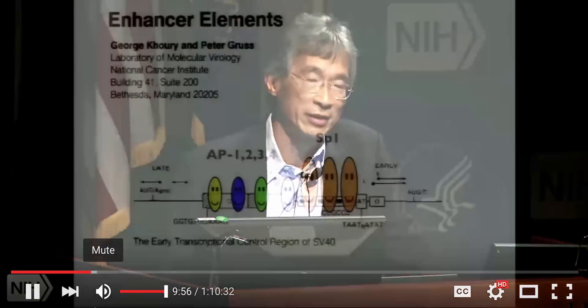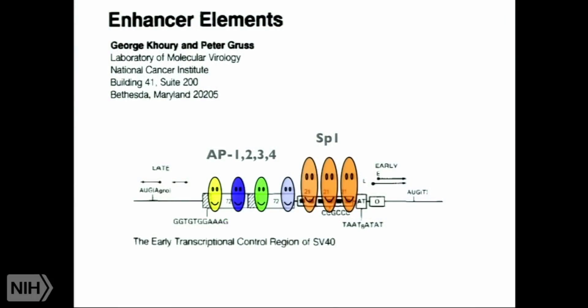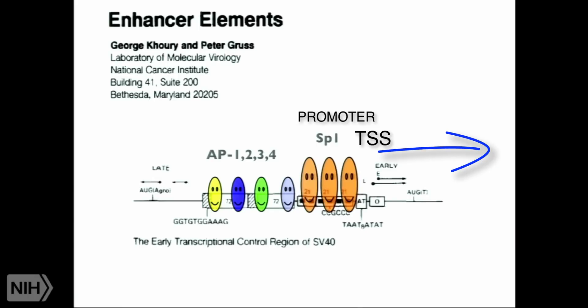The lab at Berkeley identified the first eukaryotic transcription factors. TF3A and SP1 really are the first set of eukaryotic transcription factors. SP1 recognizes the GC-rich element right upstream of the transcription start, and further upstream are the so-called AP series of factors that are also involved in recognizing the SP40 enhancer.